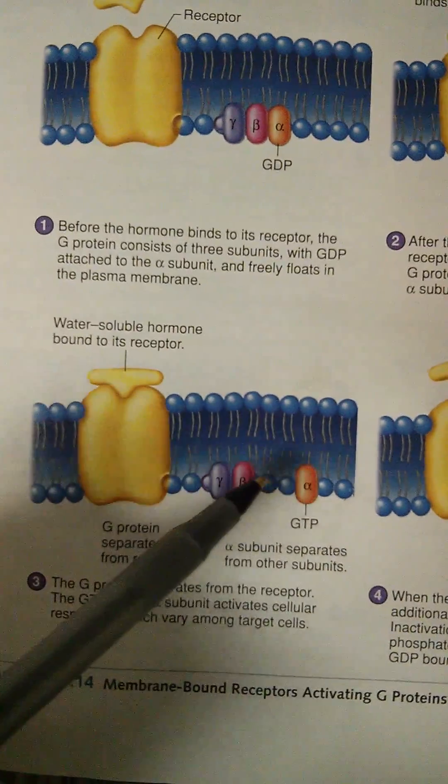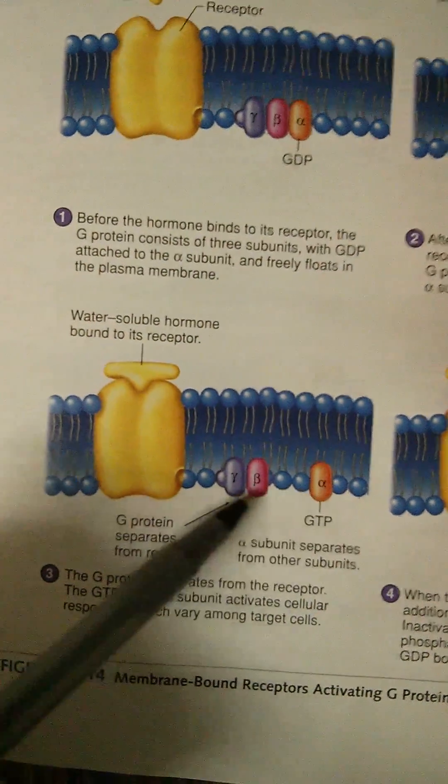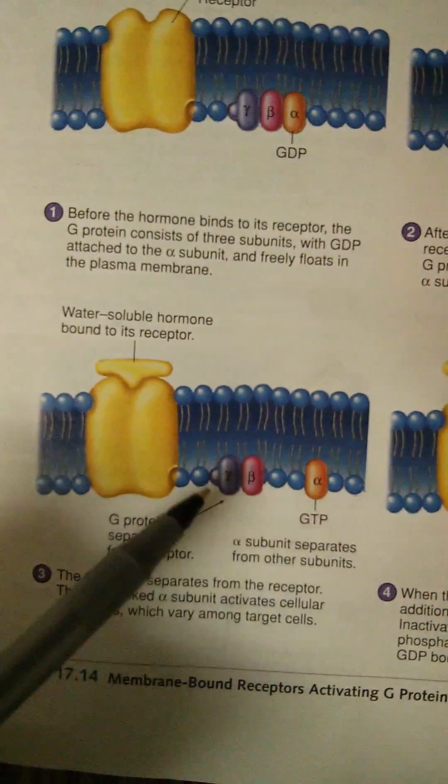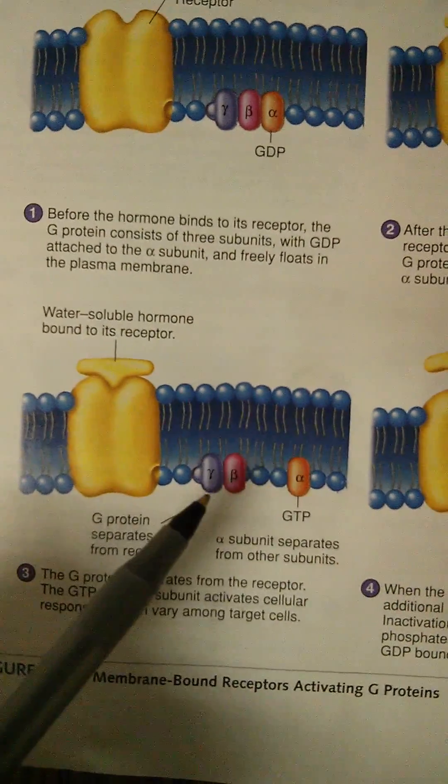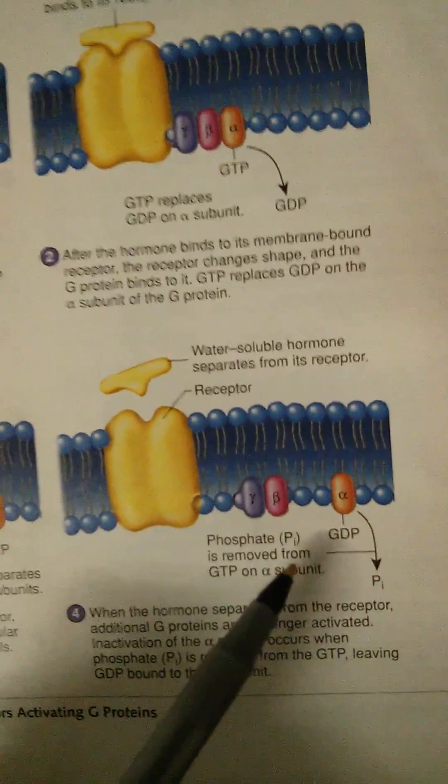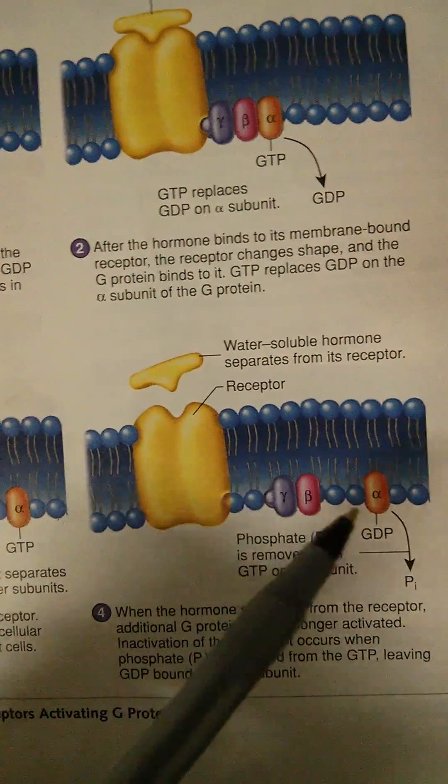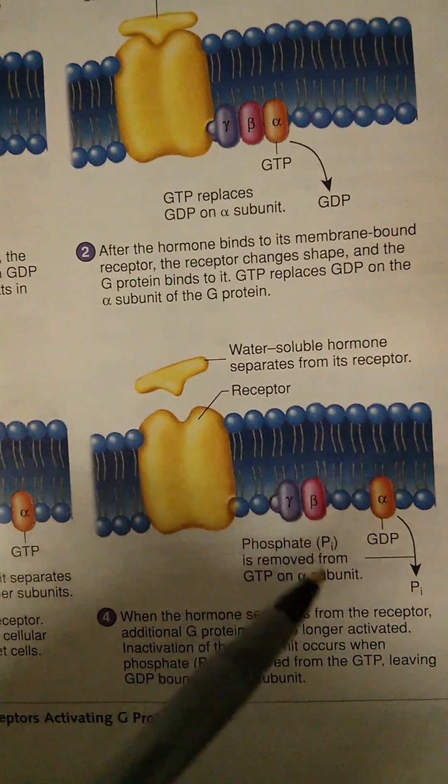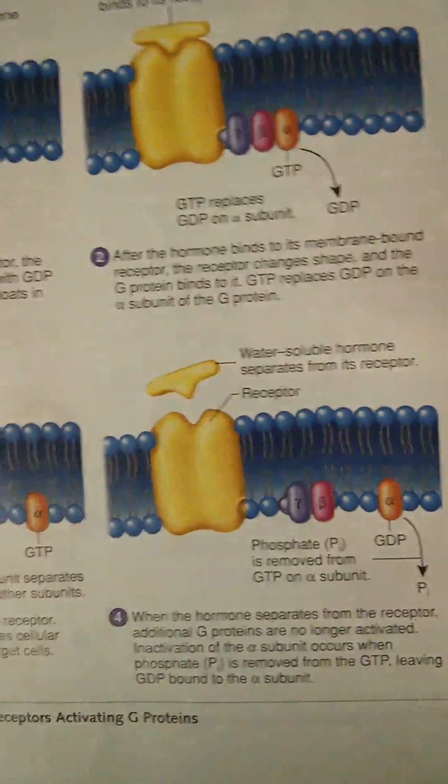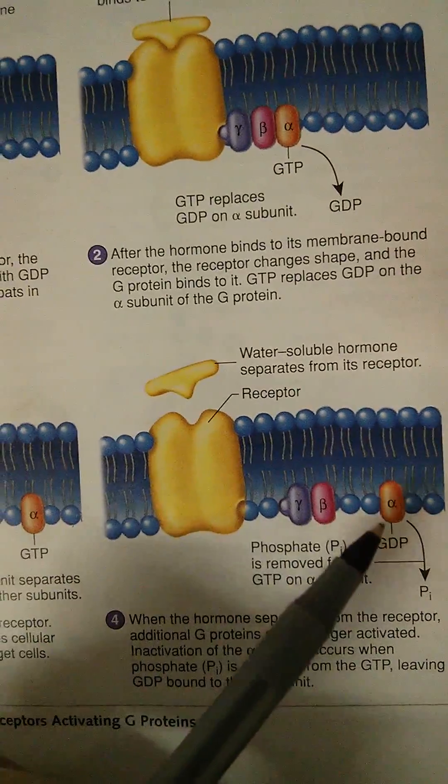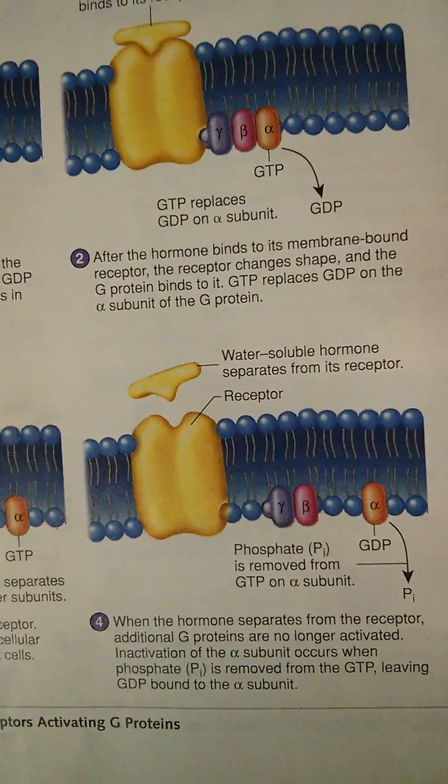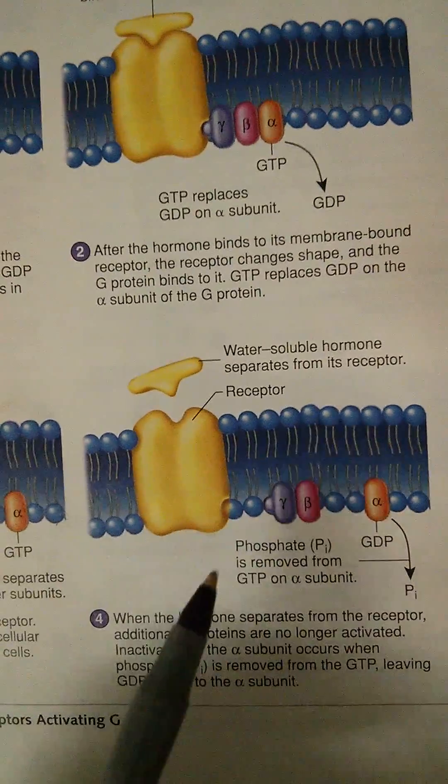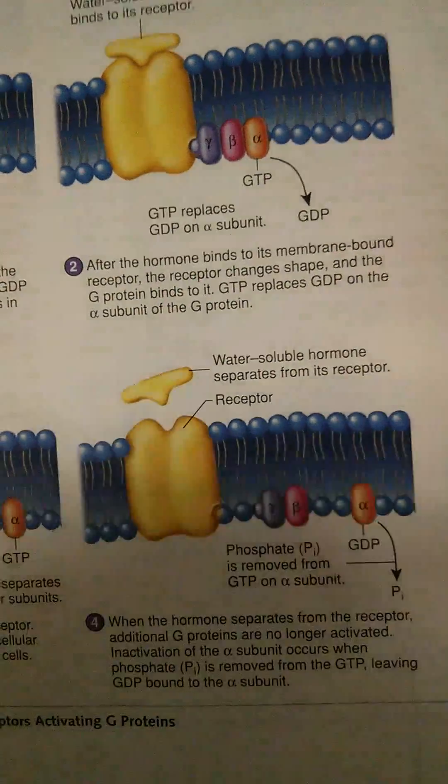Then, after that, the alpha part of the G-protein goes off alone. So A for alone, it goes off by itself, and it's going to take the message to whatever protein or enzyme that it needs to talk to in order to deliver the results. And after it actually sends a message to the desired protein, it's going to lose that energy again and go back to GDP. So let's show an example here.